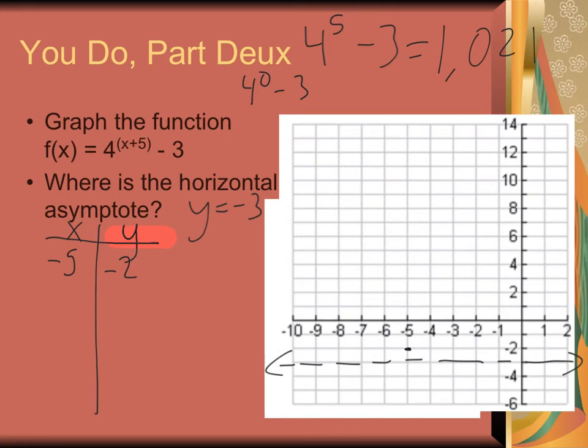Let's continue. If I plug in negative 4, I'm going to keep on getting bigger. I get 4 to the 1st. So 4 to the 1st minus 3. 4 minus 3 is 1. All right, so negative 4, 1. Excellent.